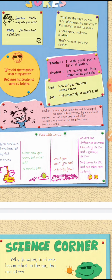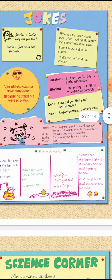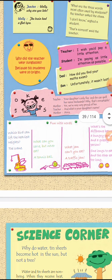Next joke in the magazine: Dad asks his son, 'How did you find your maths exam?' The son answers: 'Unfortunately, I wasn't lost' — meaning he didn't forget to appear for it, implying the exam was unavoidable. So these are the types of jokes included in the wall magazine.